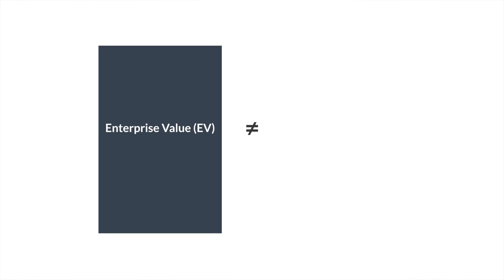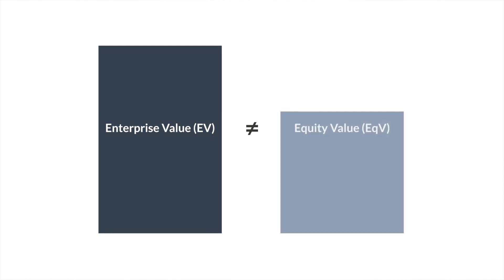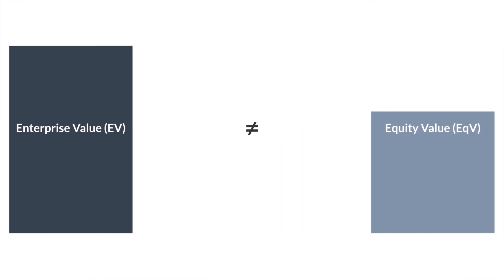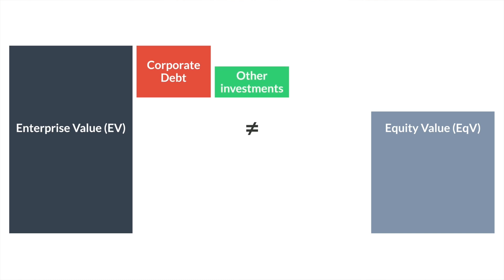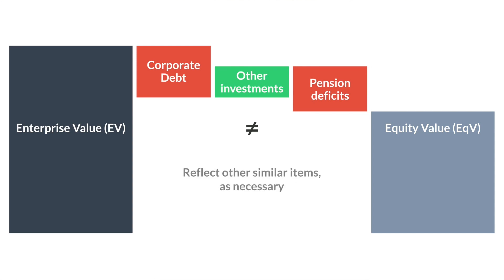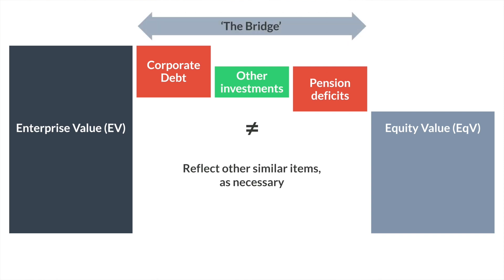Enterprise value, EV, is not likely to be equal to equity value, or EQV. The difference between the two will include debt, corporate debt, other investments, pension deficits, and similar items. These items form what they call the bridge — the bridge between enterprise value and equity value.